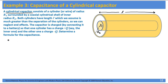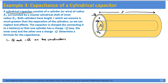To determine the capacitance we are going to use the same analytical approach as before. The first step is to place q and minus q on the conductors. I'm going to place positive q on the inner conductor and negative q on the outer conductor. As discussed at the end of the last video, it doesn't really matter which one has the positive charge, so the choice is up to you.